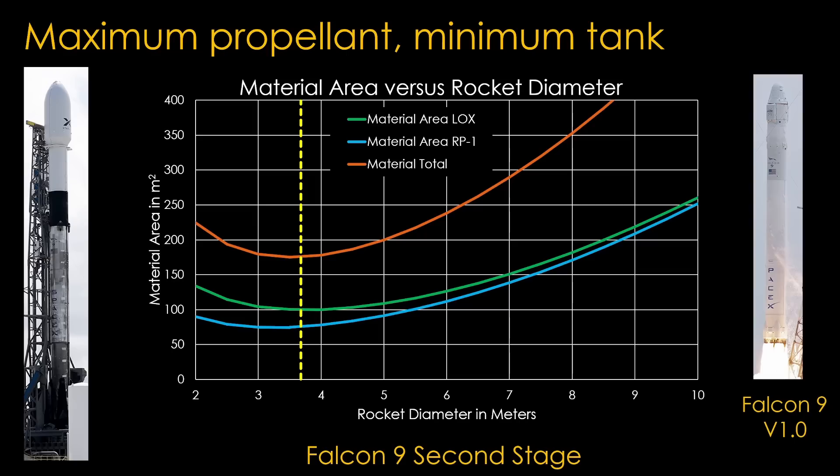Interestingly, if you look at Falcon 9 version 1.0, you'll find that the second stage carried only about half the propellant of the V1.1 version. A 3 meter rocket would be better for performance for the version 1.0 version. That suggests that the V1.1 size was what SpaceX had planned all along, and it just needed to wait for a higher thrust version of the Merlin engine to start flying it.